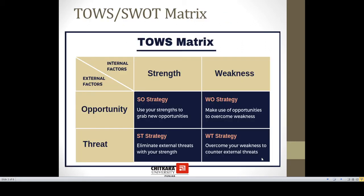The SWOT matrix — strengths, weaknesses, opportunities, and threats — can also be called the TOWS matrix. It addresses internal and external factors and their matching: SO means use your strengths to grab new opportunities; WO means make use of opportunities to overcome weaknesses; ST means eliminate external threats with your strengths; and WT means overcome your weaknesses to counter external threats.